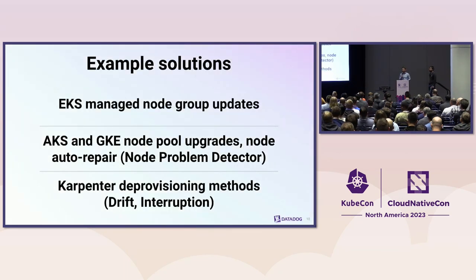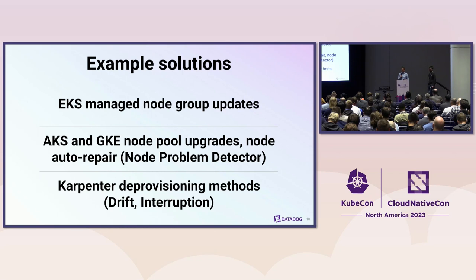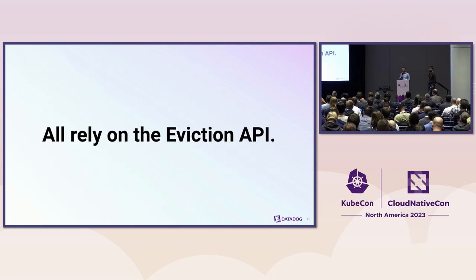You may be familiar with some node replacement solutions. The three major cloud providers automatically upgrade nodes and handle VM retirements with their managed node groups and node pools. On AKS and GKE, for node auto repair, they rely on an open source project called node problem detector, which can run as a daemon set or as part of machine images. It detects common problems like bad memory and failing disks, adds a condition on the node status, and that condition triggers node replacements. I'd also like to mention Carpenter, an alternative to Cluster Autoscaler on AWS that takes care of node replacements. Importantly, all of those solutions rely on the Eviction API to protect workloads.